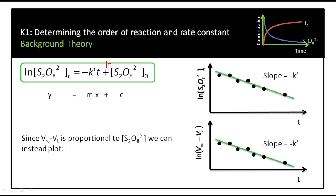We want to plot the natural log of persulfate against time T, but we can't directly measure persulfate concentration. We measure it indirectly through titration volumes. Because titration volumes relate to persulfate concentration, we instead plot log(V∞ − Vt) against time T, and from the slope we get the rate constant K′.